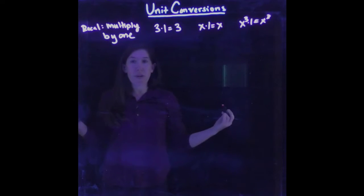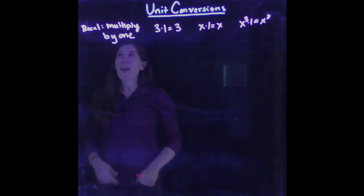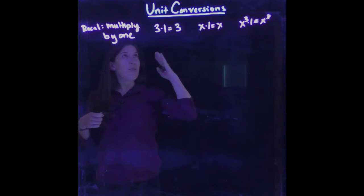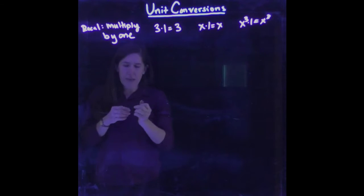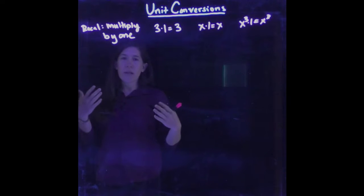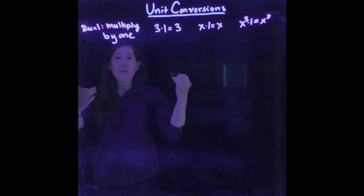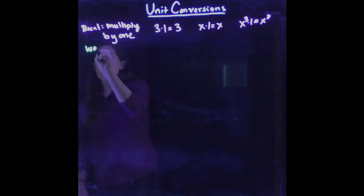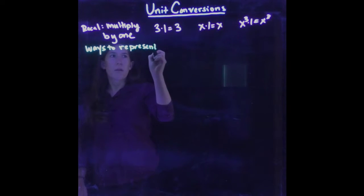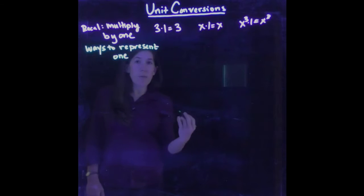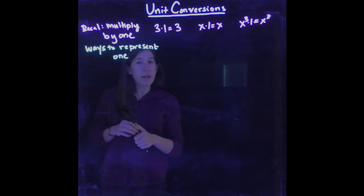And right now you're already super bored, you're like duh, I can multiply by 1 and get the same thing back. But it turns out that whenever you're doing unit conversions, you're just using this basic fact. It just looks more complicated. Because the key here is that I'm just writing the number 1 as 1. But you can think of representing the number 1 in lots of different ways. So let's think about ways to represent the number 1.